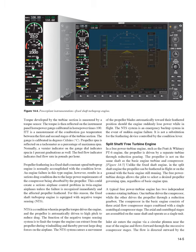Split Shaft/Free Turbine Engine. In a free power turbine engine, such as the Pratt and Whitney PT-6, the propeller is driven by a separate turbine through reduction gearing. The propeller is not on the same shaft as the basic engine turbine and compressor. Unlike the fixed shaft engine, in the split shaft engine the propeller can be feathered in flight or on the ground with the basic engine still running. The free power turbine design allows the pilot to select a desired propeller governing RPM regardless of basic engine RPM. A typical free power turbine engine has two independent counter-rotating turbines: one drives the compressor, while the other drives the propeller through a reduction gearbox.